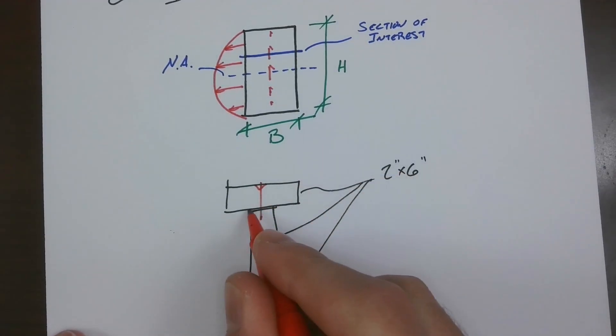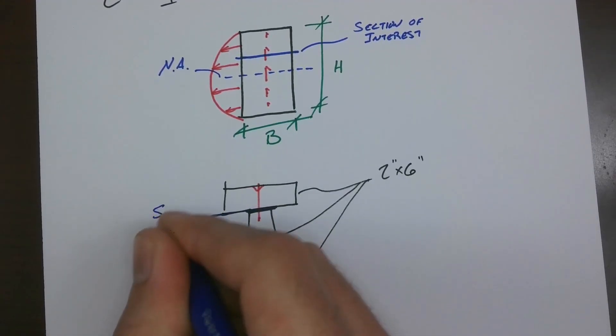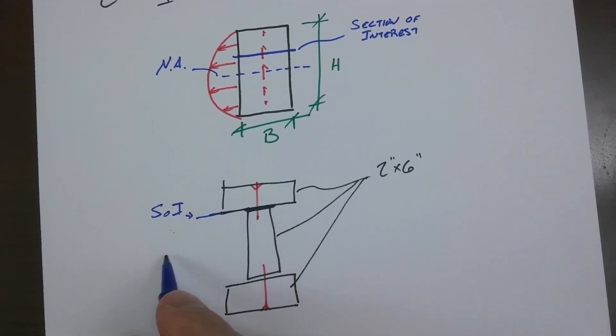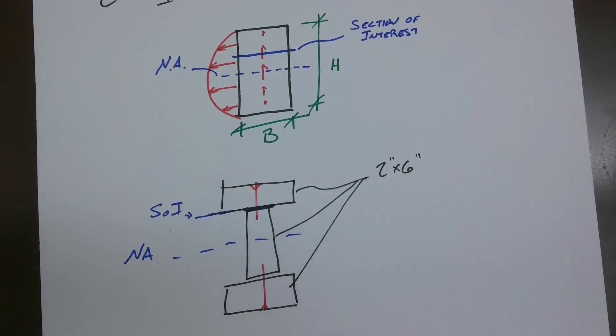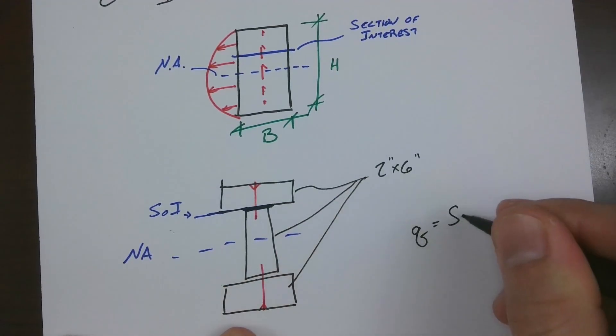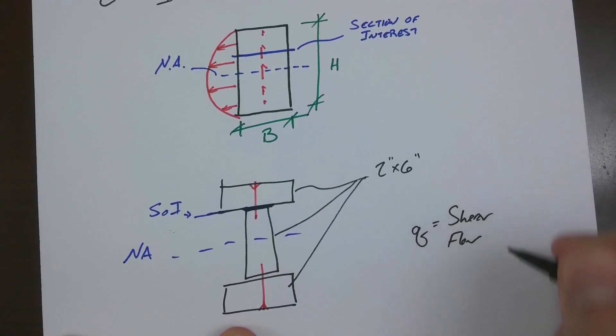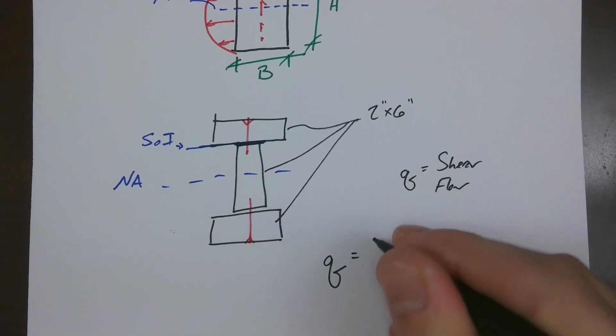So here we're looking at a section of interest right there. And obviously our neutral axis is going to be smack in the middle, right? So we can calculate our shear flow, Q equals shear flow. We can calculate our shear flow Q equal to VQ over I, where V is the applied shear on the section.